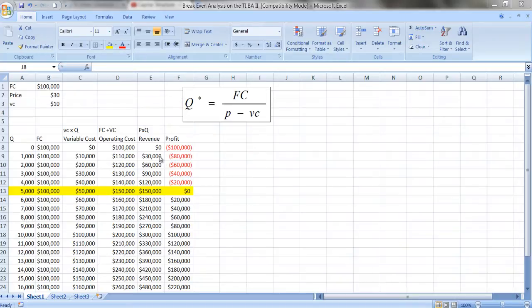How about revenue? Revenue is going to be equal to price times the amount that you produce. So if you produce nothing, you make nothing. If you produce 10,000 units times a price of $30, then you're going to earn $300,000.